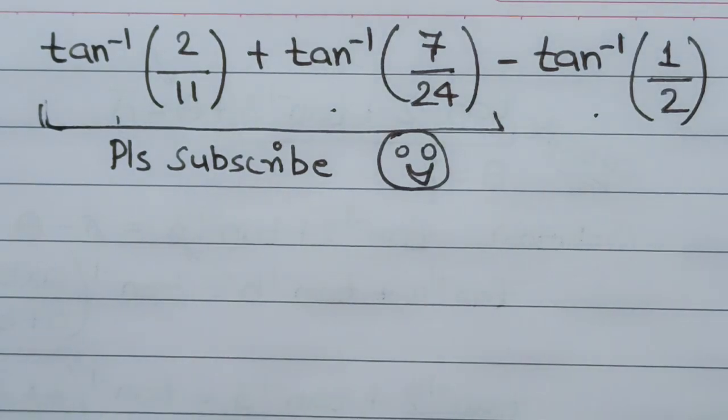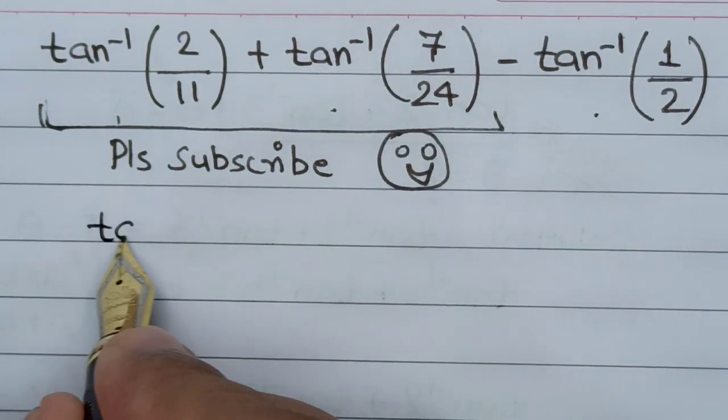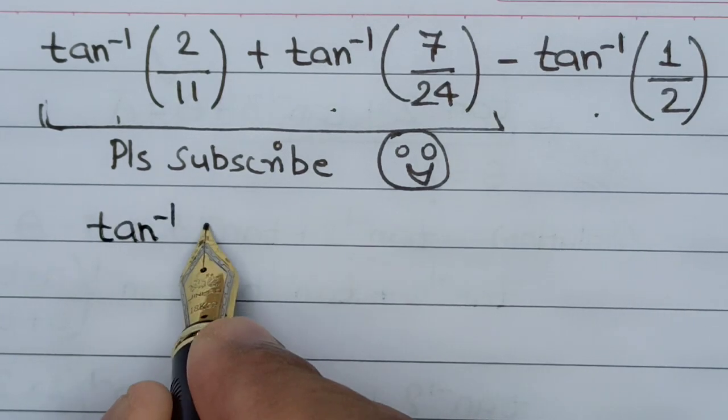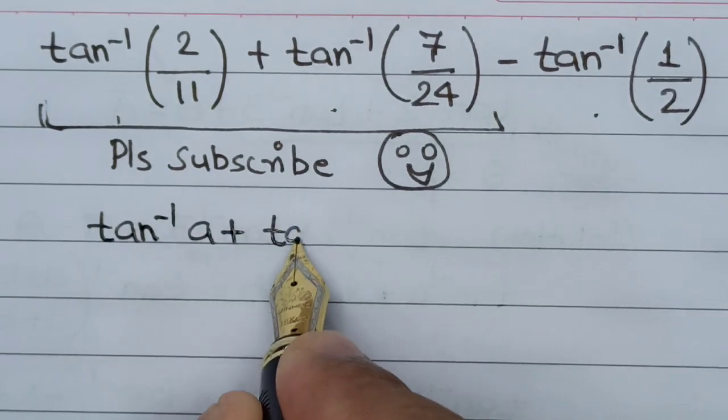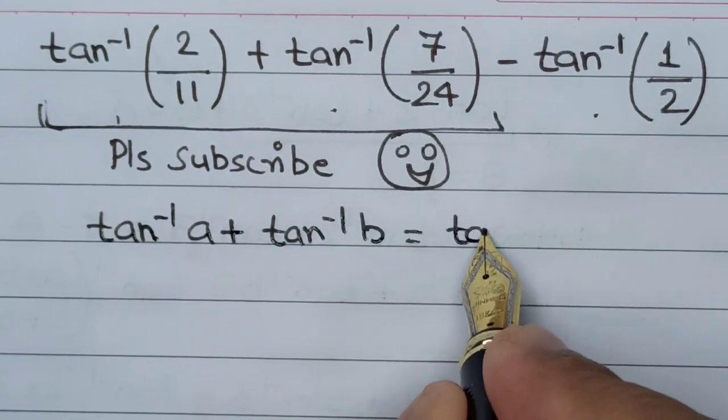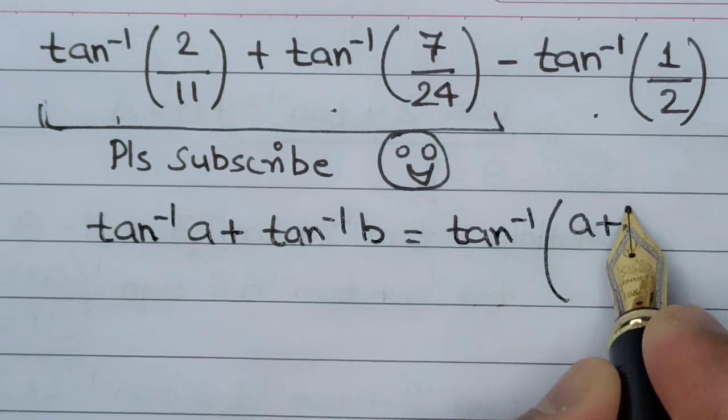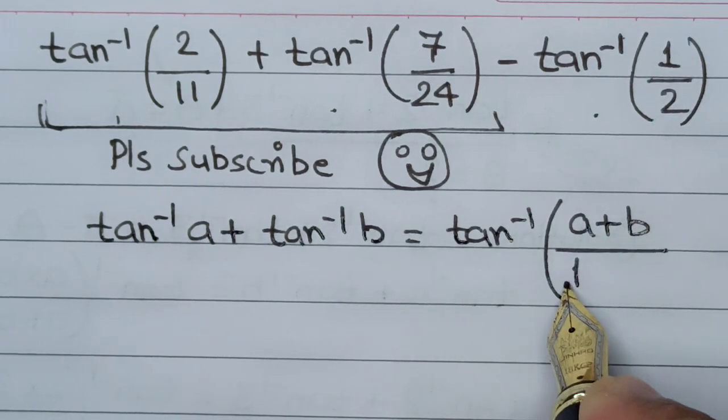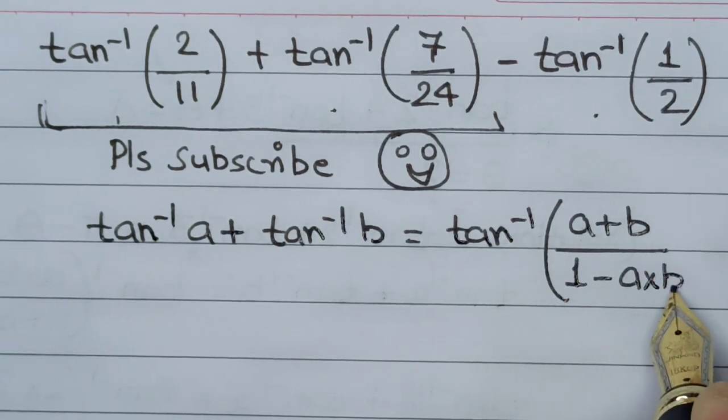The standard formula that we have is: tan⁻¹(a) + tan⁻¹(b) = tan⁻¹((a+b)/(1-ab)).